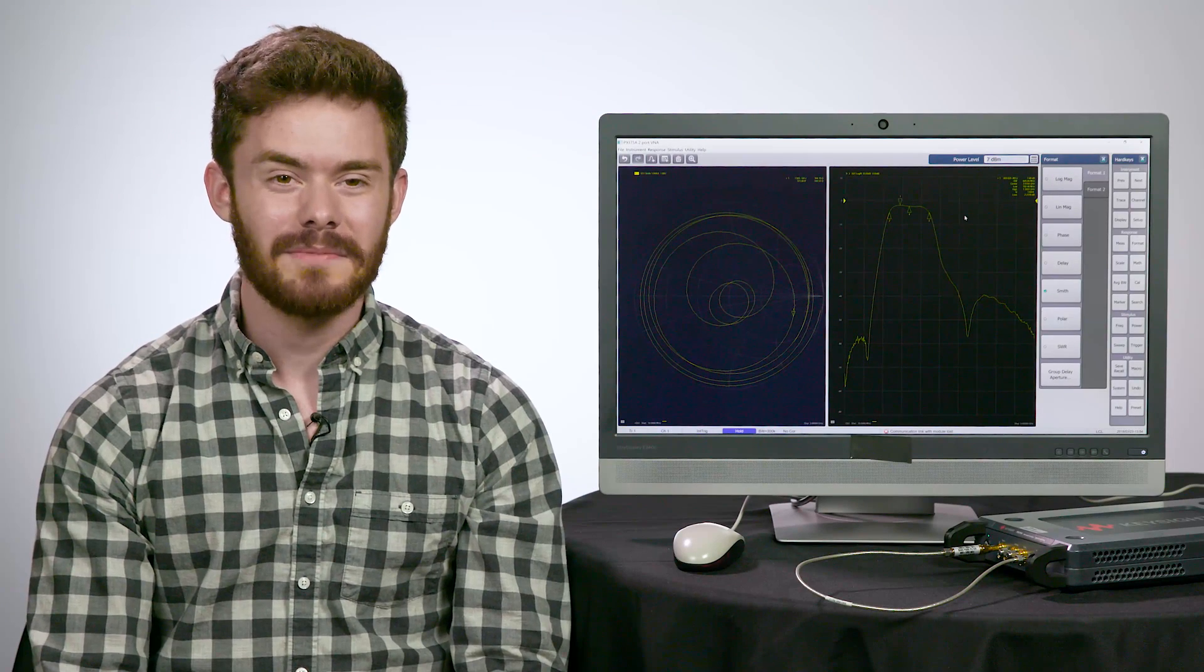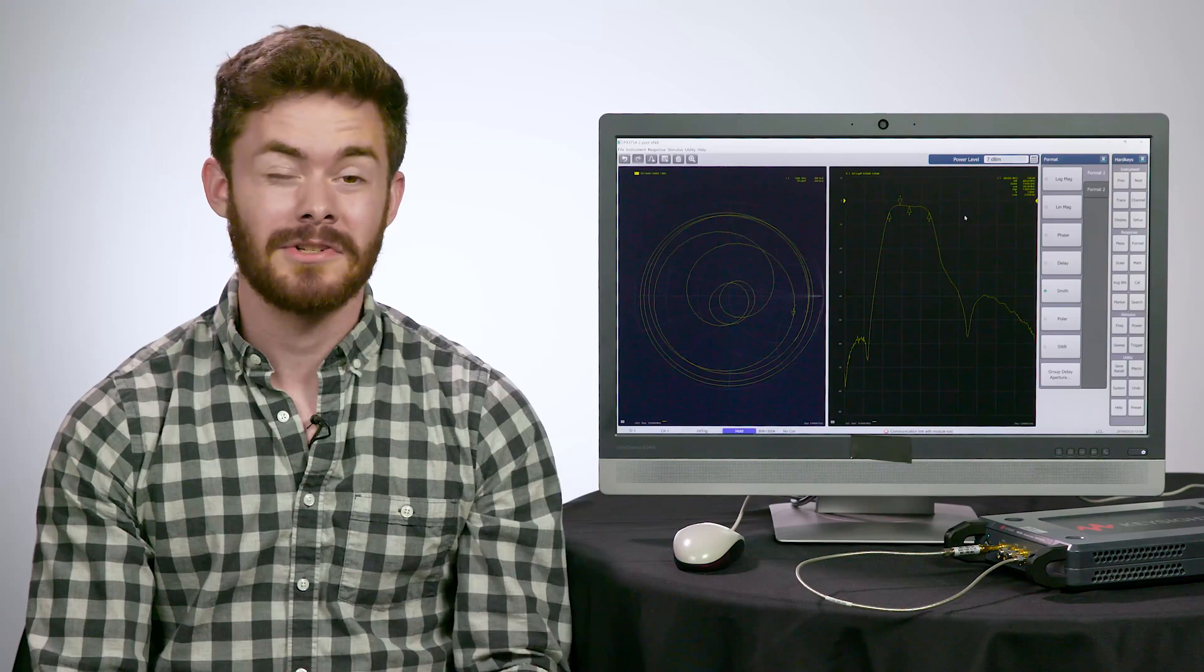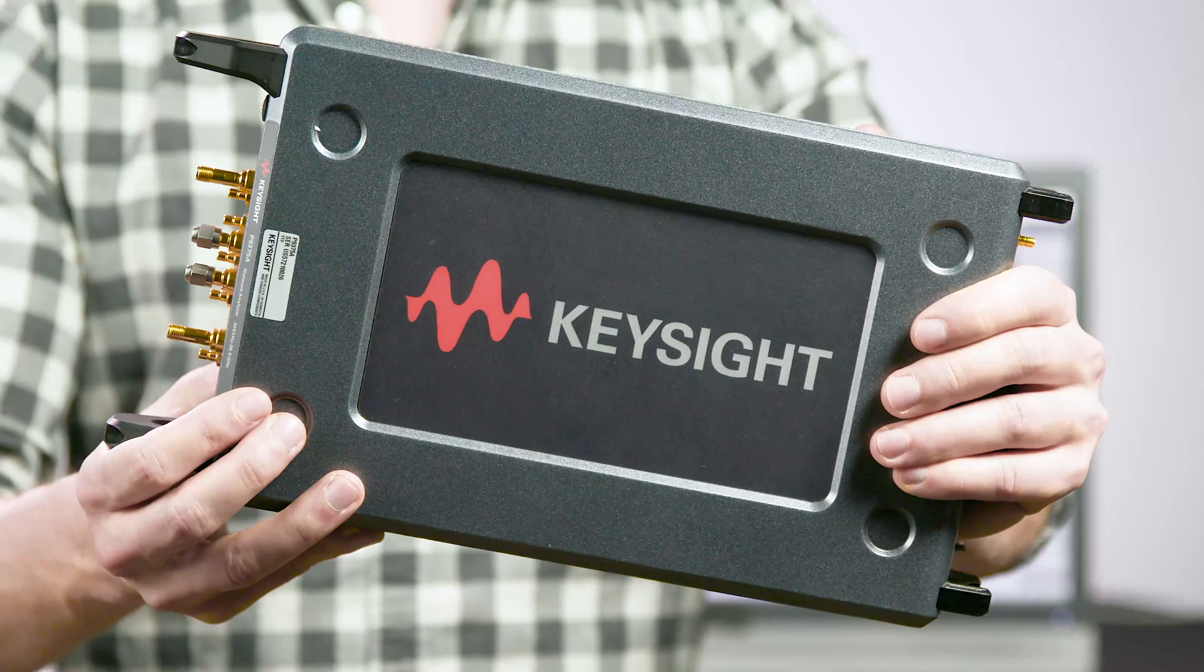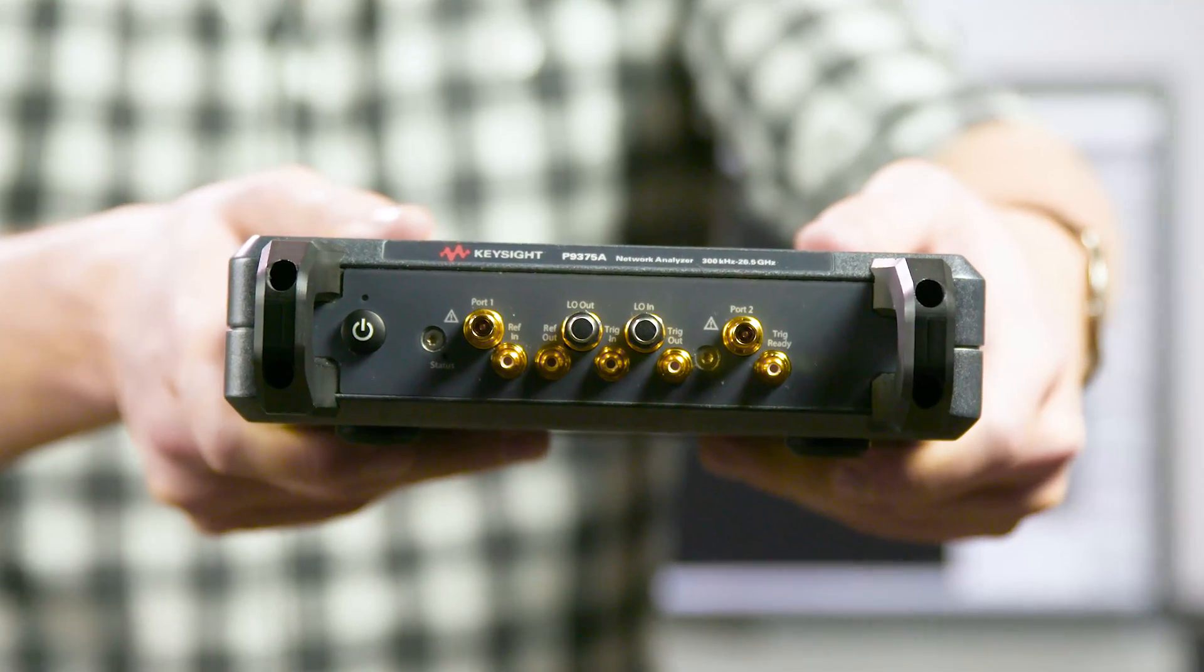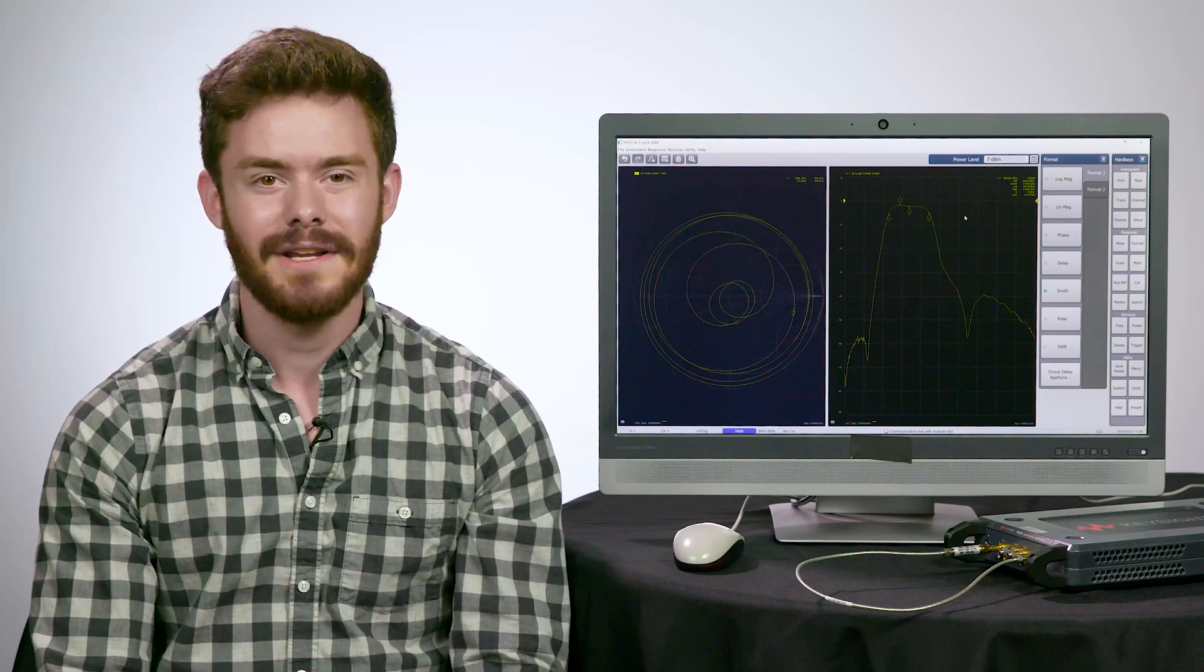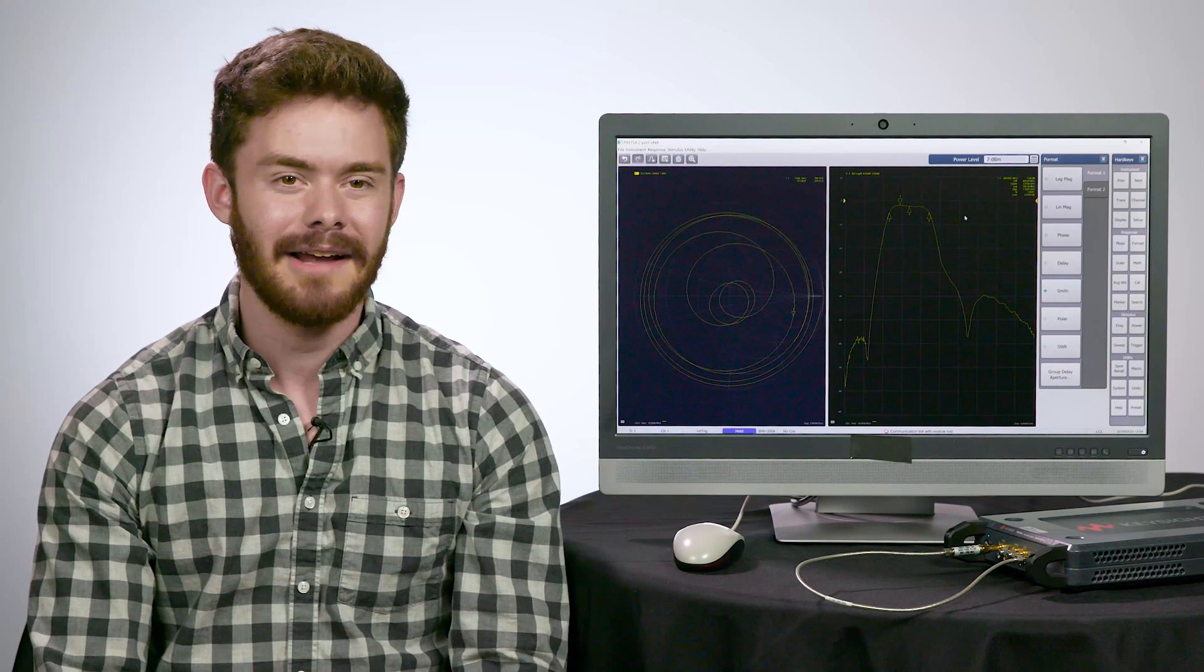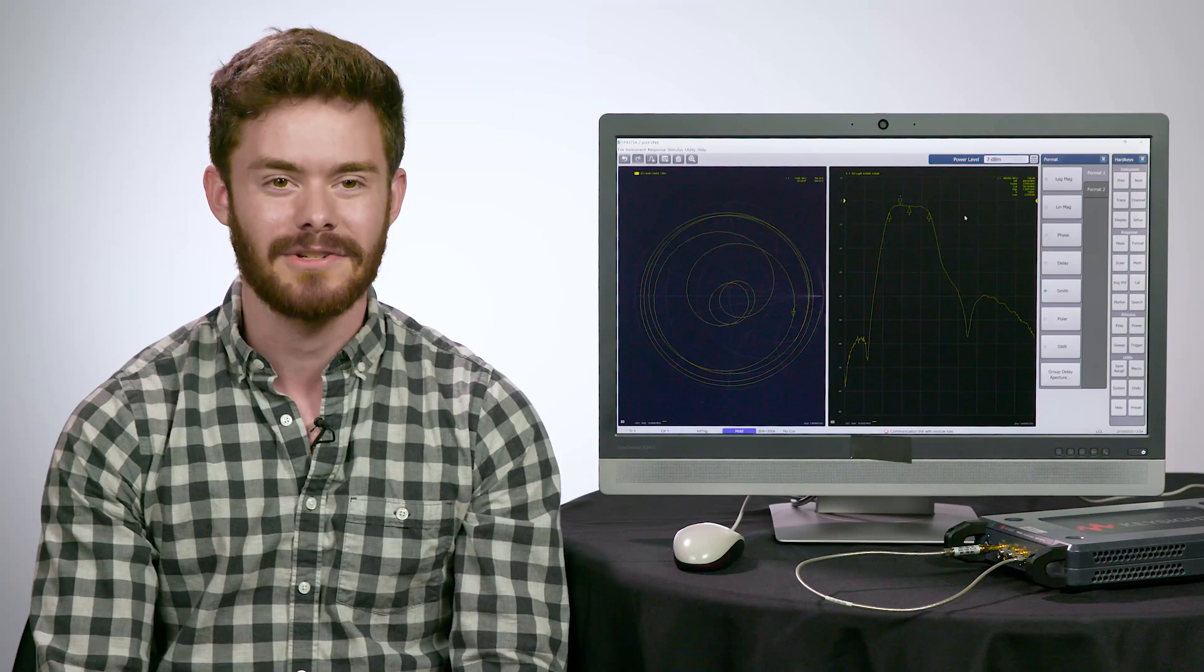These new VNAs are USB compact instruments which are great for transporting between labs and test floors. They are all 2-port models and range from 4.5 to 26.5 GHz. In this video you will learn how to get the new VNA set up and calibrated and how to do some basic testing with it to ensure you're making accurate measurements.